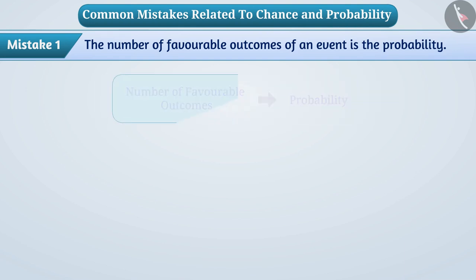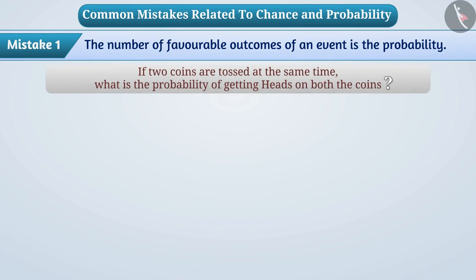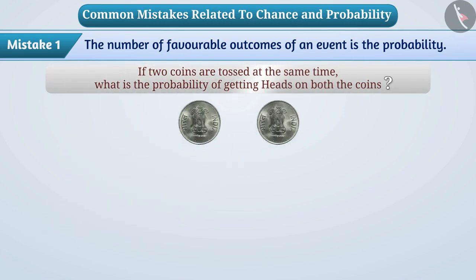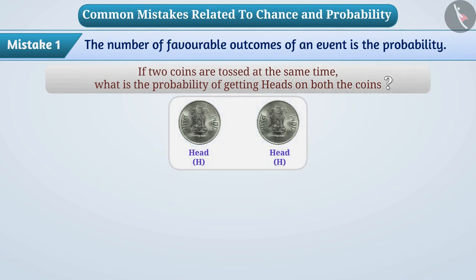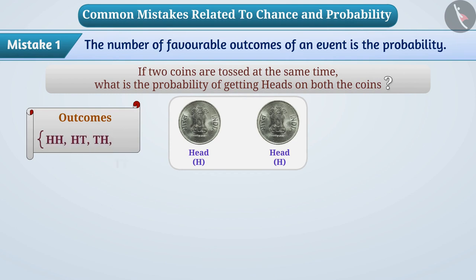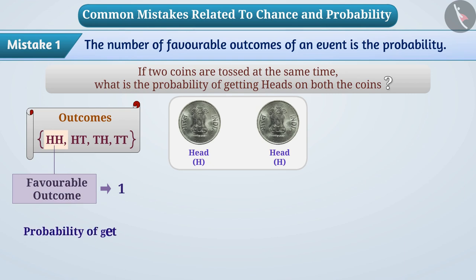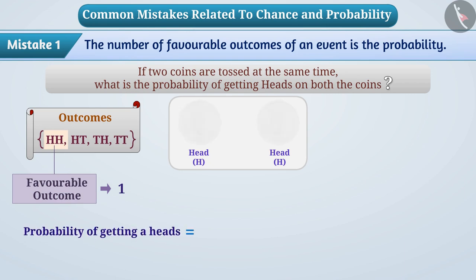For example, if children are asked — if two coins are tossed at the same time, what is the probability of getting heads on both coins? Some children think that the outcomes are HH, HT, TH, or TT, in which the favorable outcome HH is only 1. Therefore, children say that the probability of getting heads on both coins is 1.